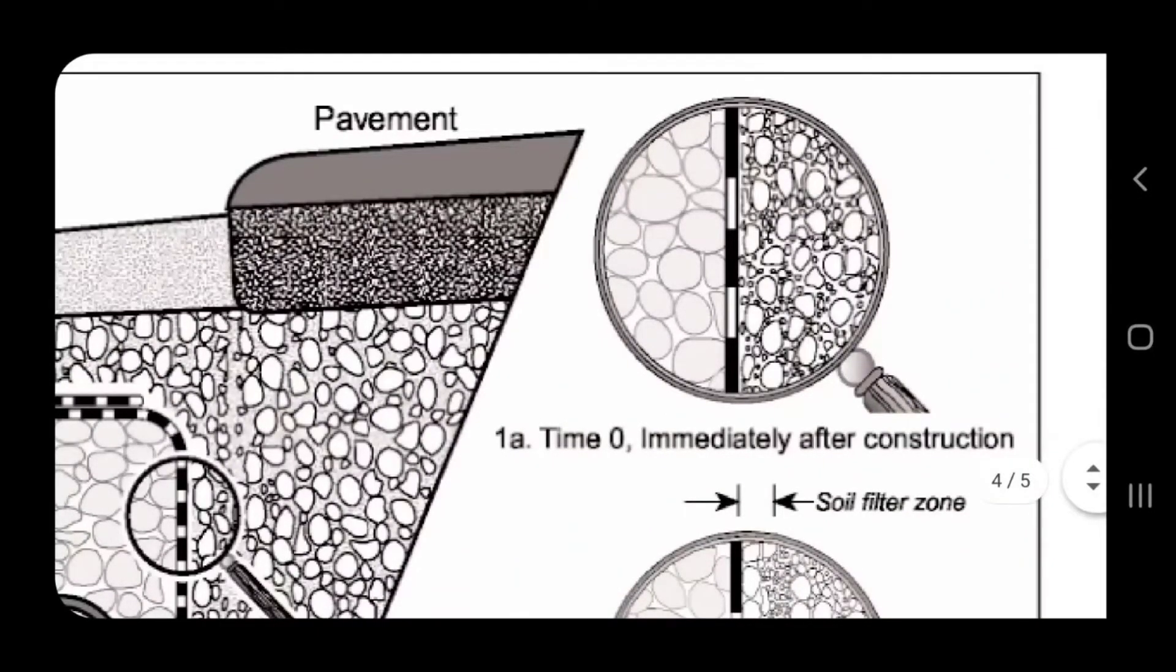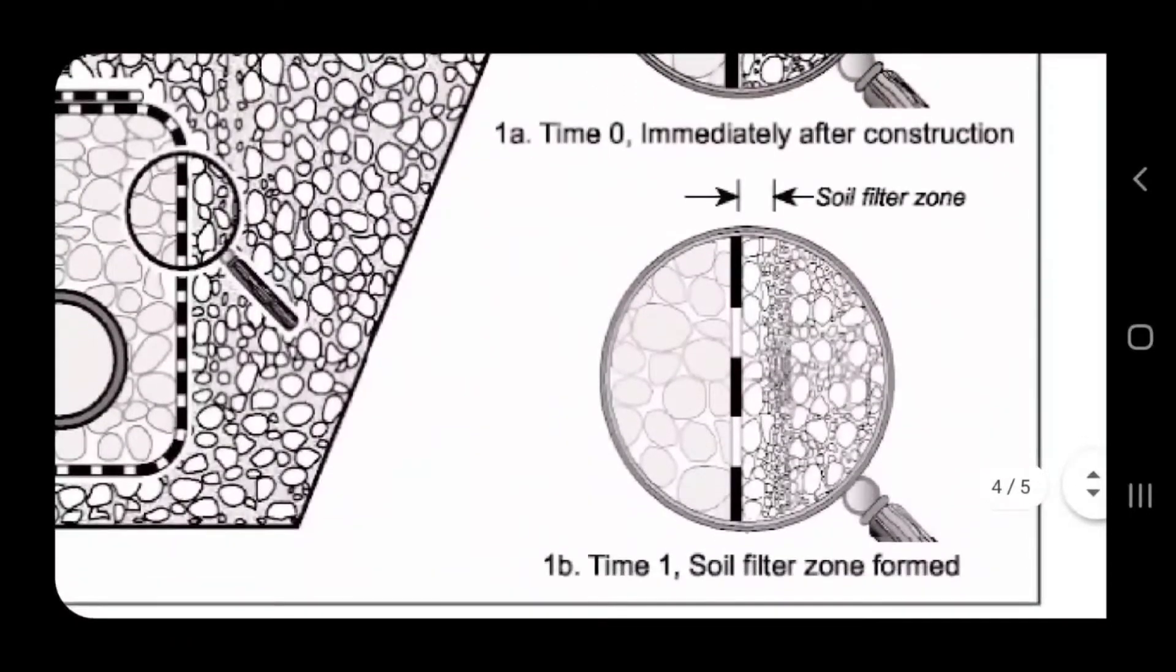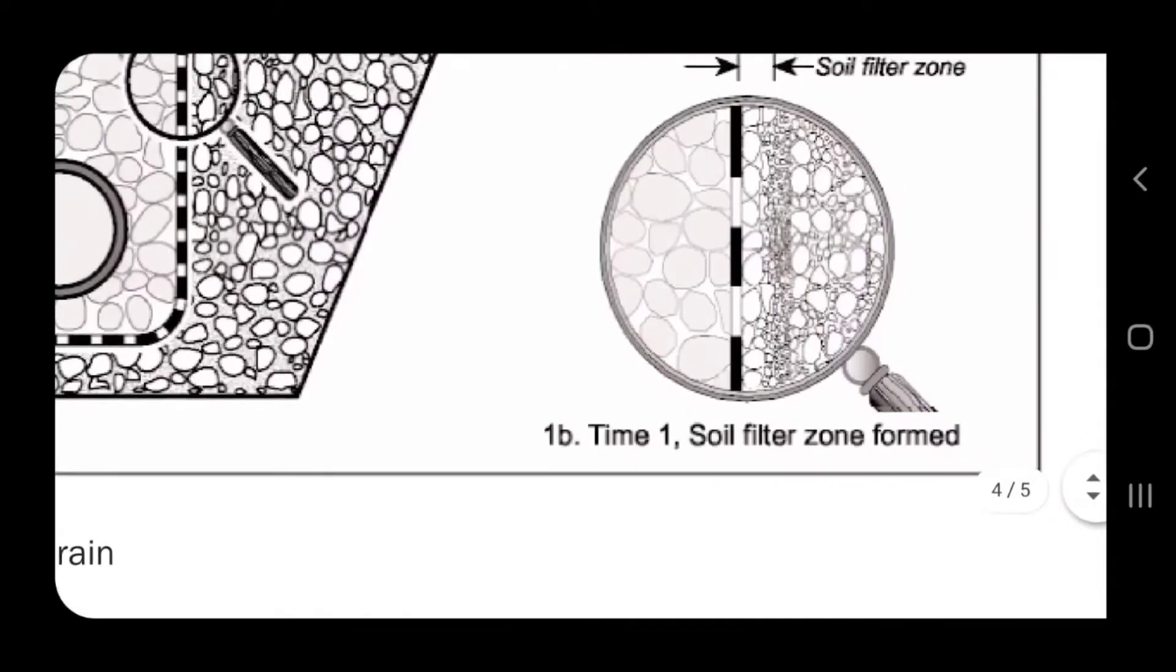When that forms, you are going to get some out of this world performance that you just can't even believe. Because the contractors that have switched over to our non-woven geotextile double punch fabric, they cannot believe how well it works. This is why it works so well, and they won't go back to not using non-woven geotextile fabric that's double punched.